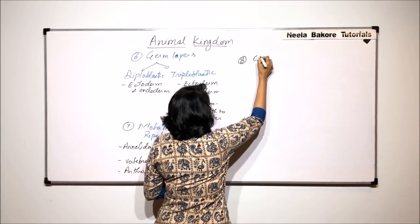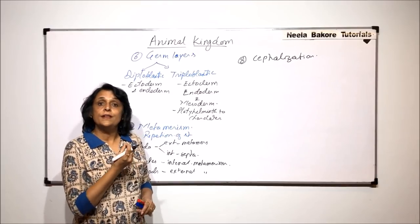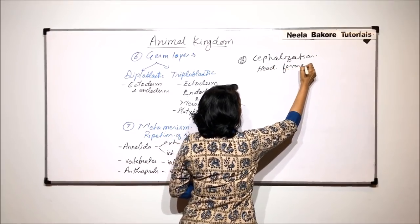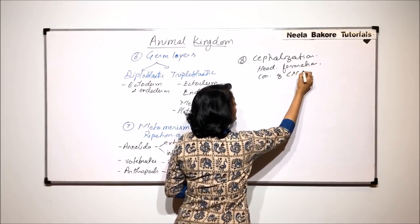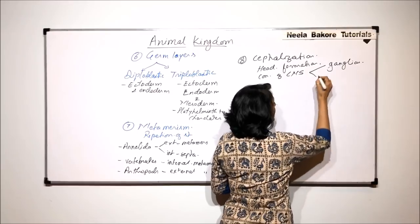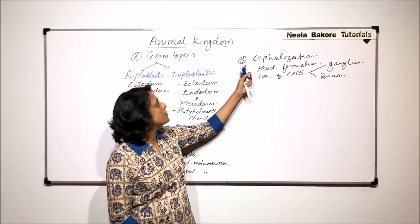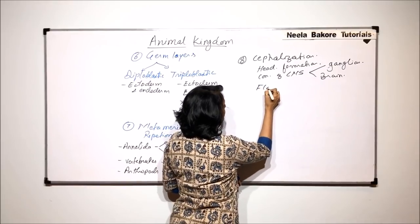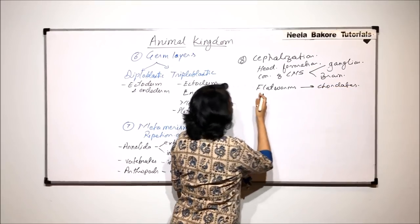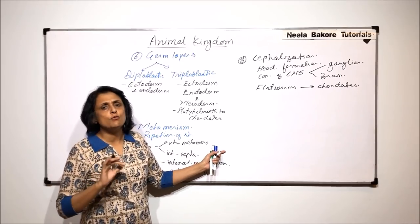Another parameter is cephalization. Cephalization is basically the concentration of the nervous system towards the anterior part — in simple words, head formation. This is due to concentration of the central nervous system, which could be in the form of a ganglion or a brain towards the anterior side. Head formation starts from platyhelminthes and goes up to chordates. Before this, there is no cephalization, no head-like structure; neurons may be diffused or scattered.